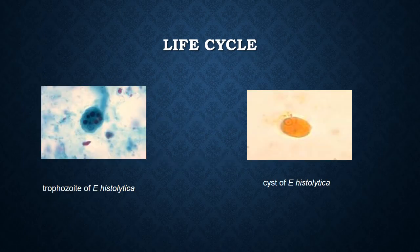Life cycle of Entamoeba histolytica. First, there is ingestion of the cysts. Then, excystation occurs in the small intestine. The division of the quadrinucleate cyst into four and then eight trophozoites occurs.